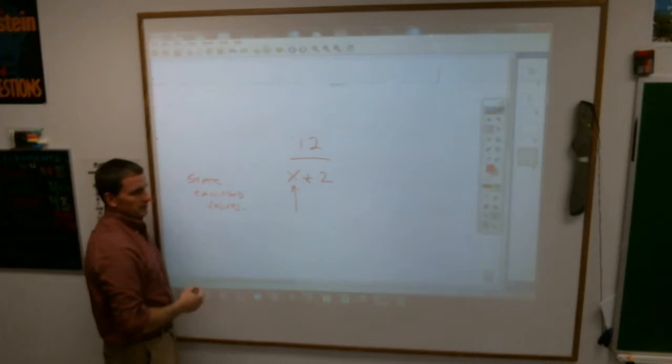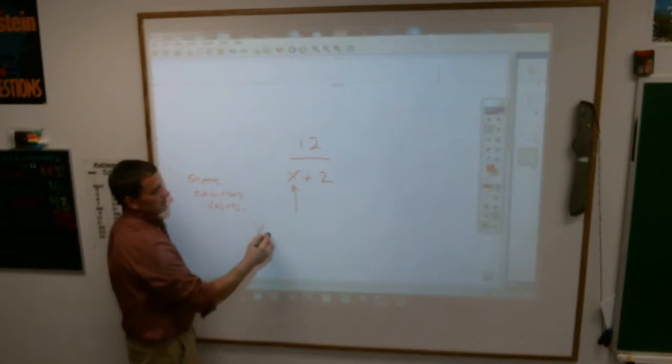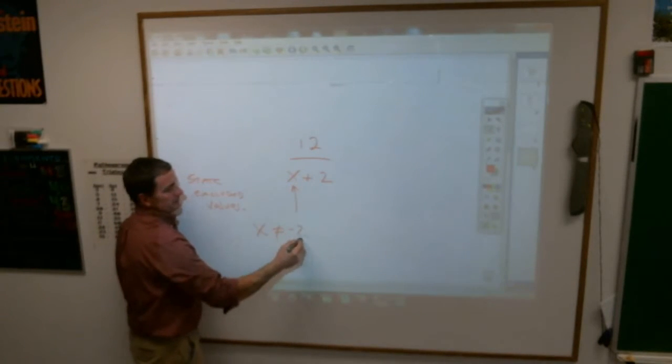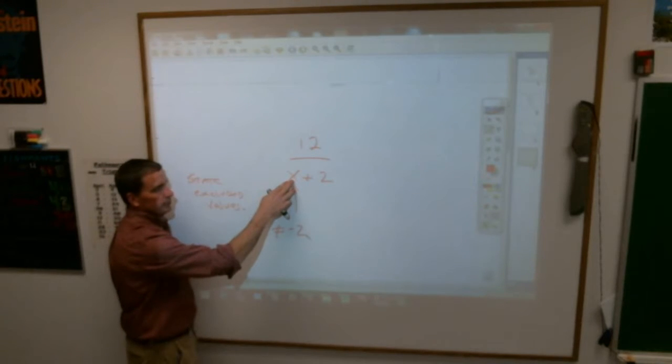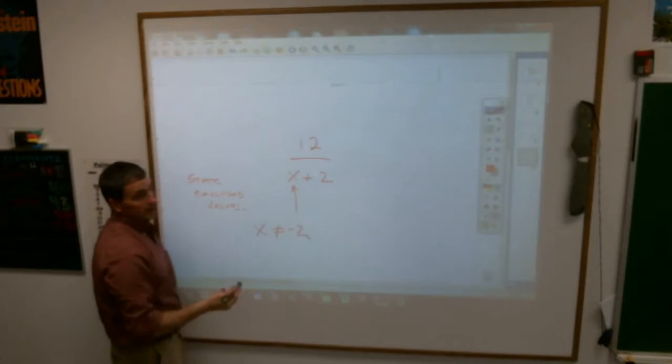Logan, it is? Negative two. Right, so you'd write it like this, x cannot be negative two. Because if you put a negative two in there, negative two plus two is zero, you get something that is undefined you can't do.